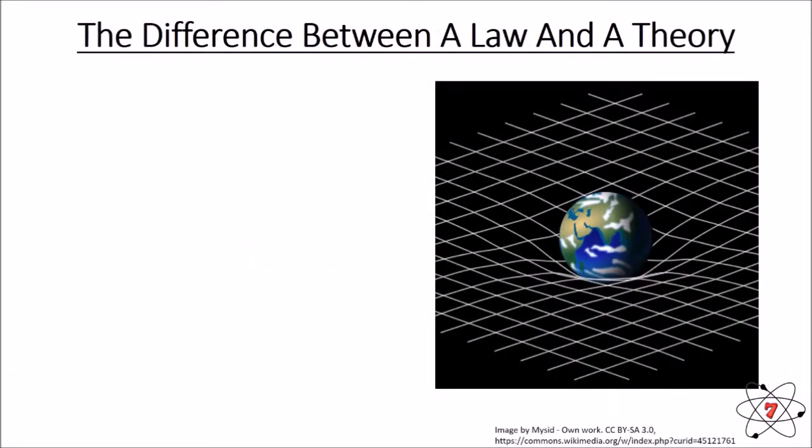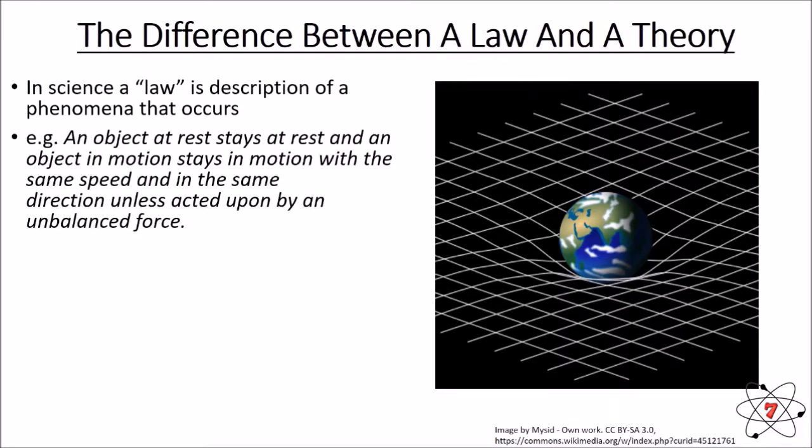Now you often hear the word theory being used in talking about science, but actually there is a difference between a theory and a law. A law in science is a description of a phenomena that occurs. So for example, an object at rest stays at rest, and an object in motion stays in motion with the same speed and the same direction unless acted upon by an unbalanced force. This is a really famous law. It's one of Newton's laws of motion. And it describes something that is happening. It describes a phenomena. This is not what a theory is.